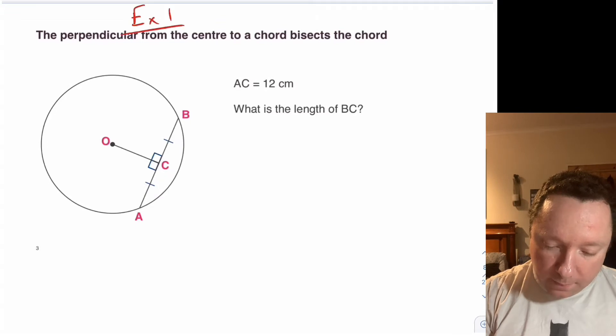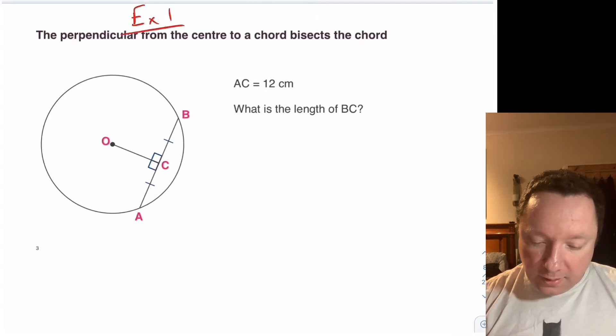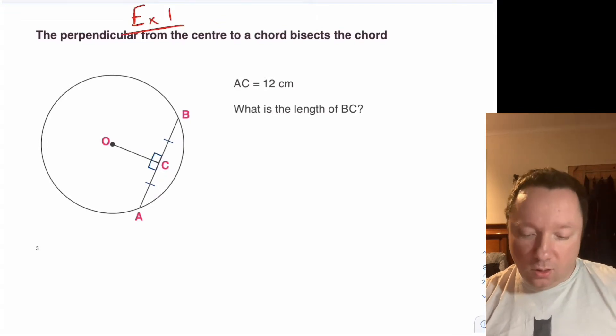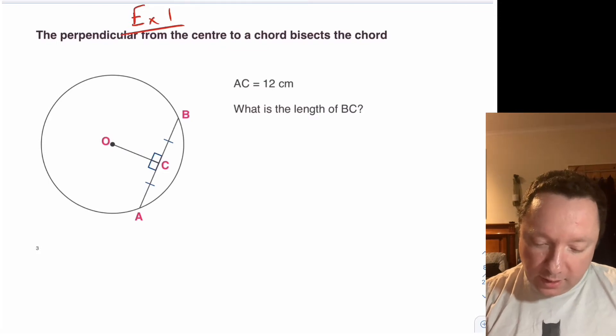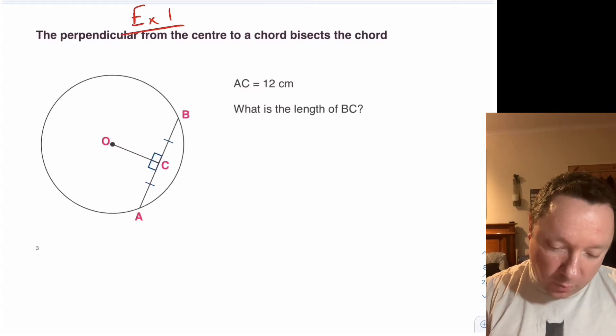So for example one, the perpendicular from the centre to a chord bisects the chord. We've got the line telling us AC is 12 and it's asking us what the length of BC is. So there's AC here so I can write 12 next to that. BC is on this side.